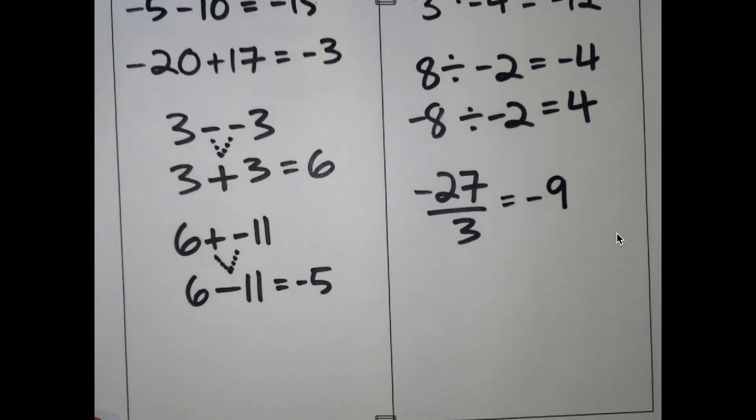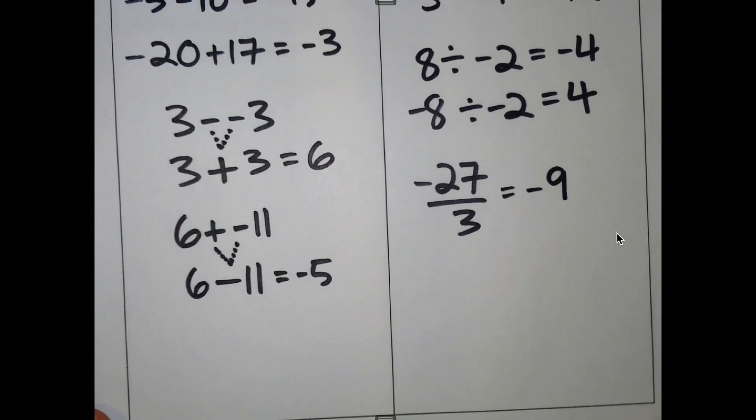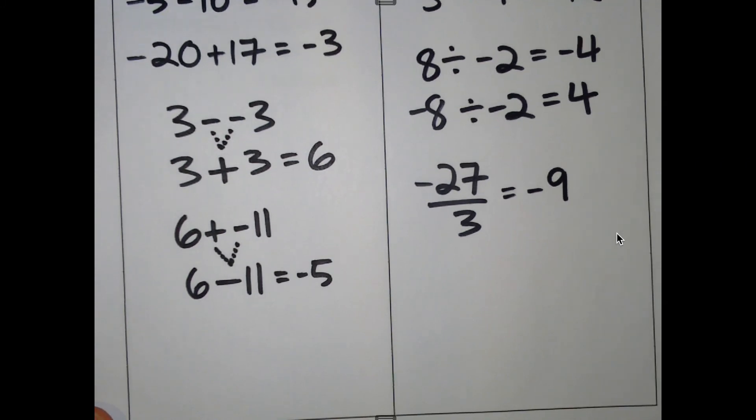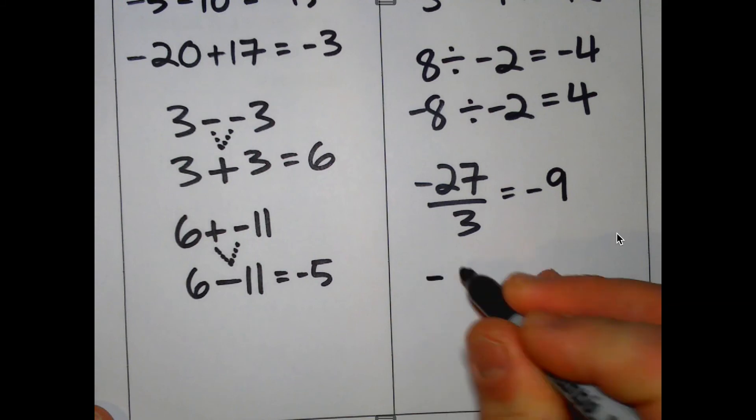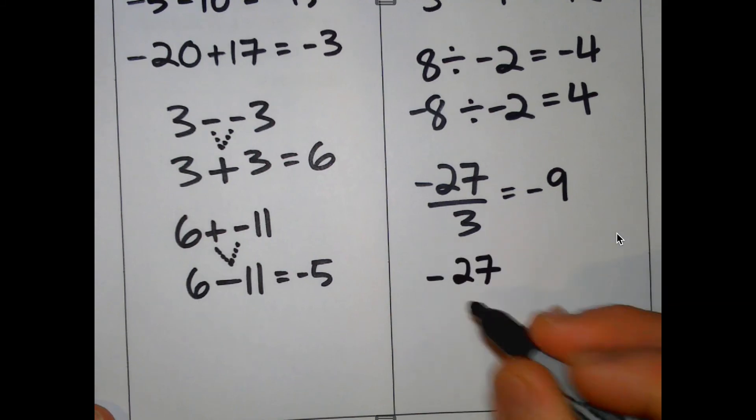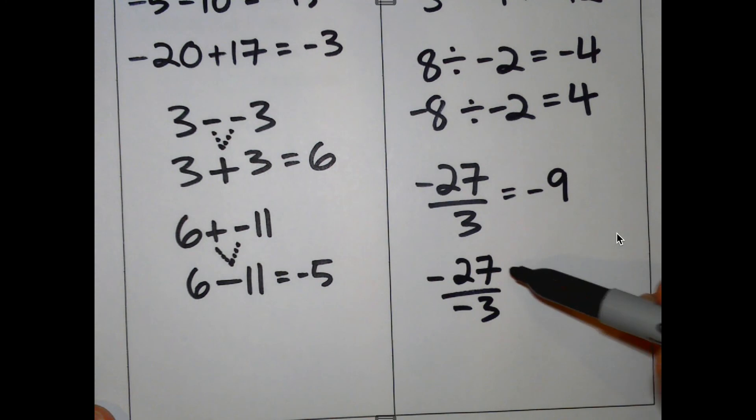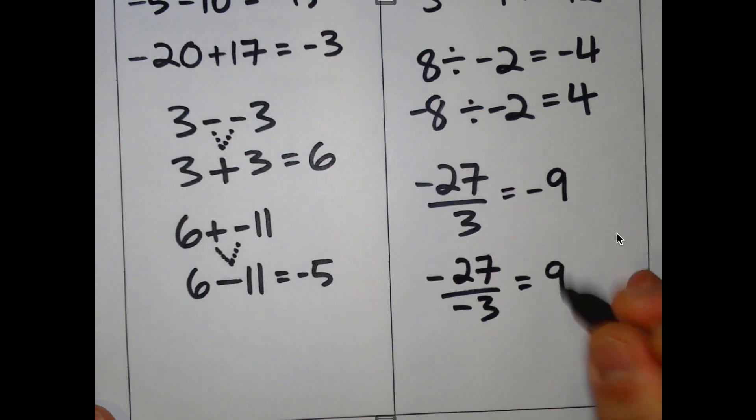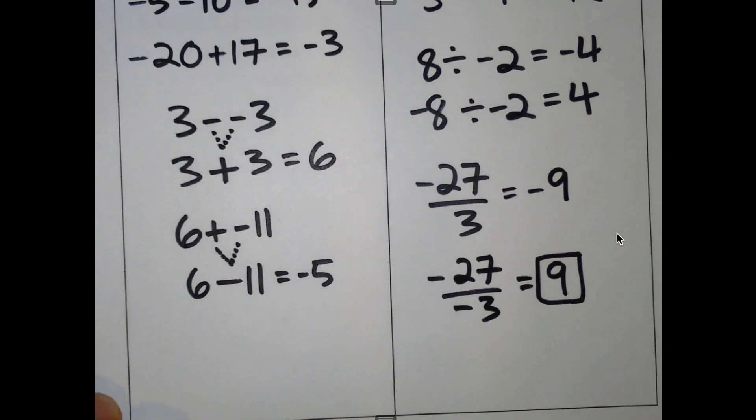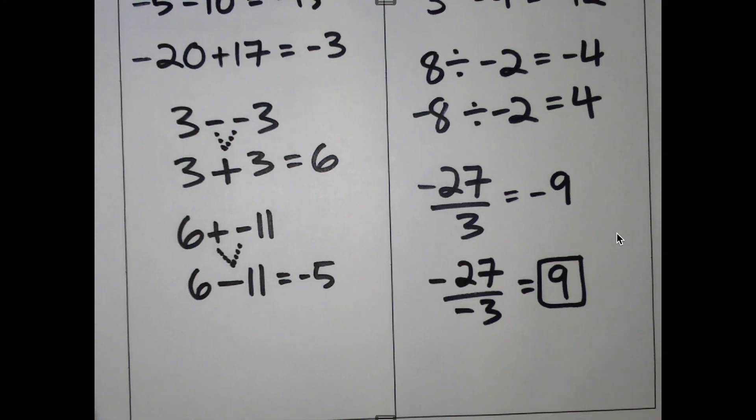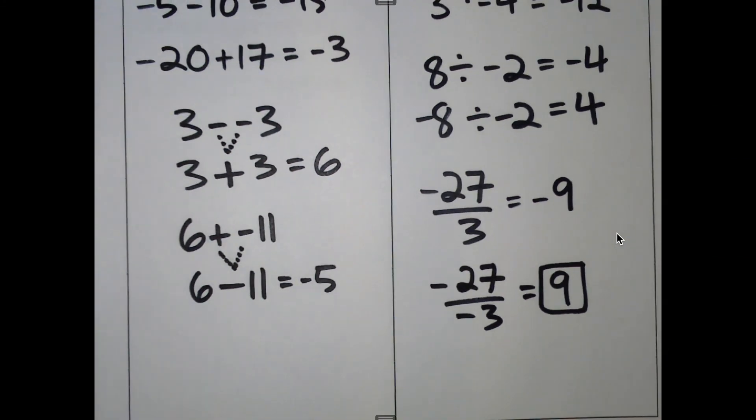And these are really important when we start doing algebra problems because you deal with these things a lot. You want to end your problem with a positive variable. So you'll have to know these rules when solving algebraic equations. So if you have a negative number divided by a negative number, you get a positive number.